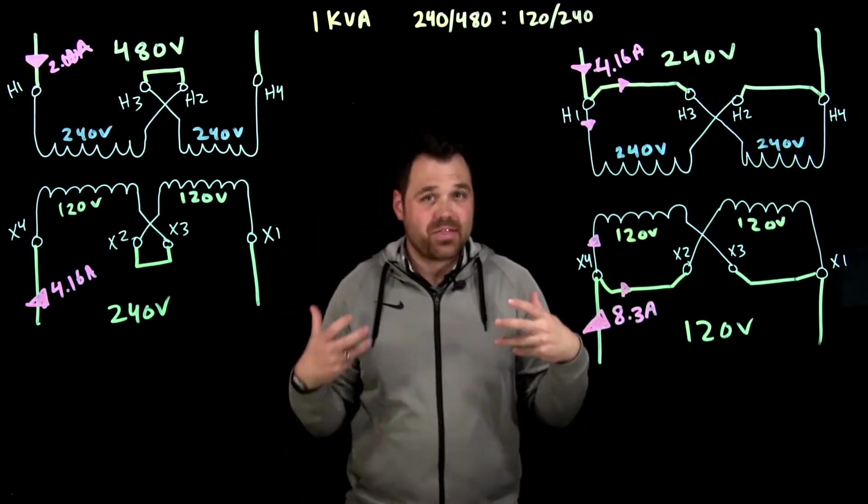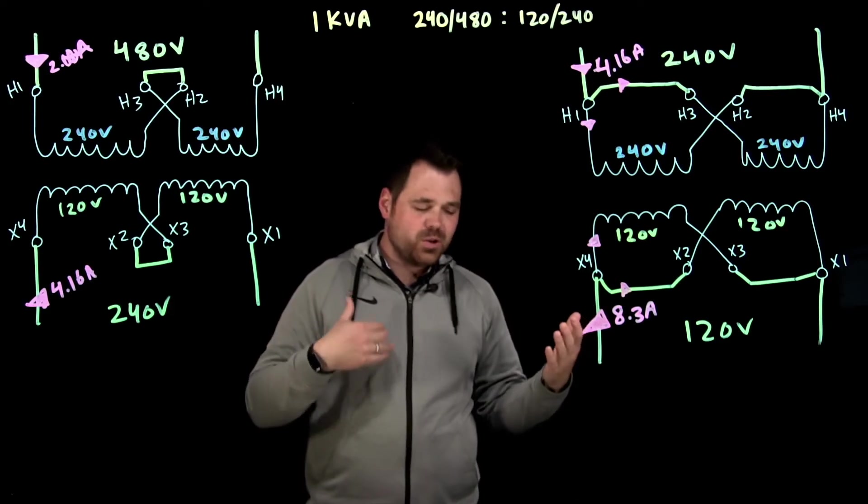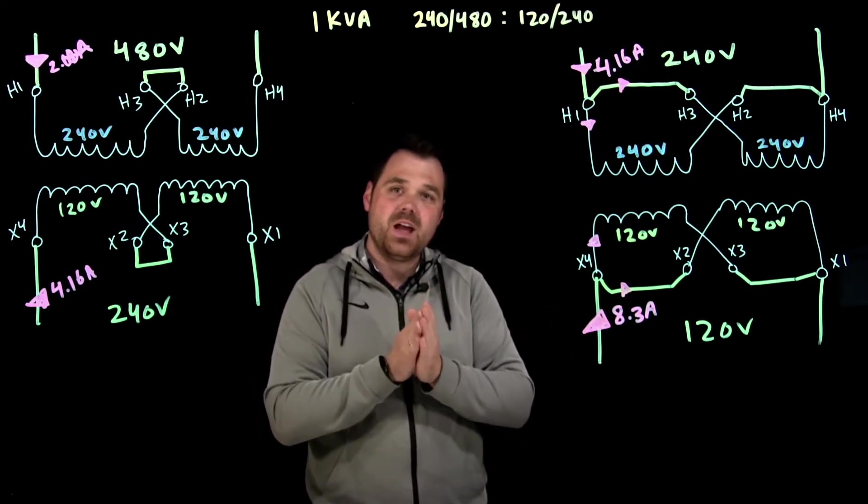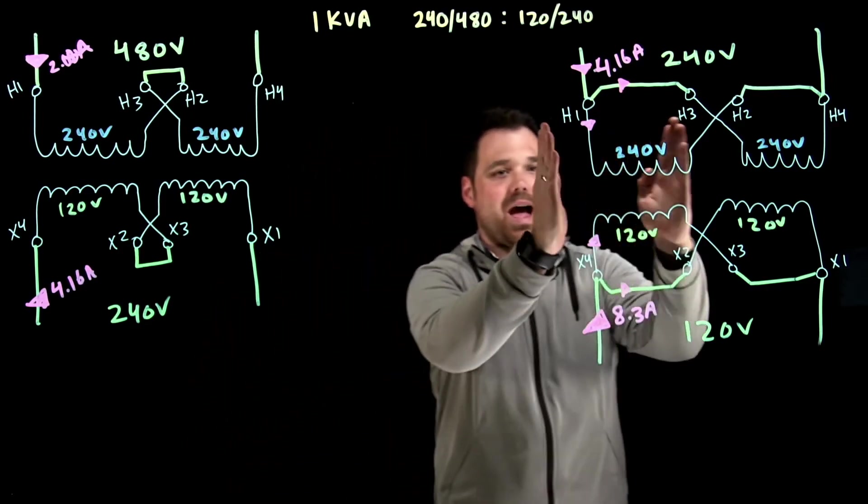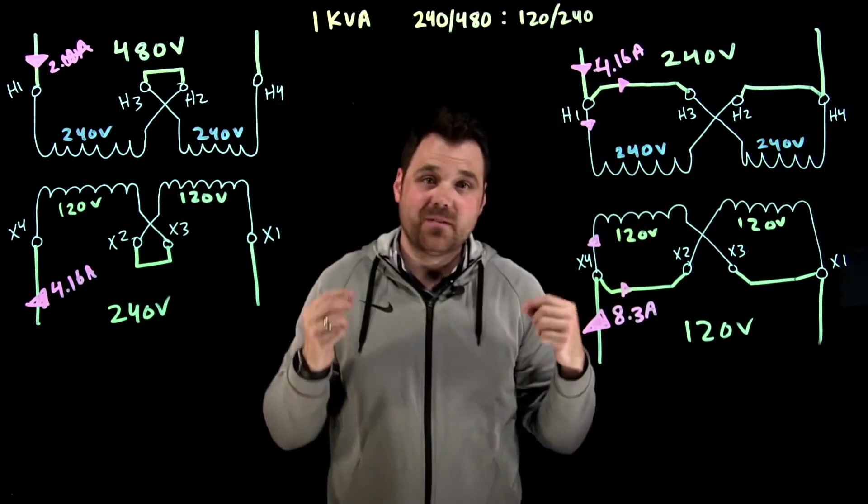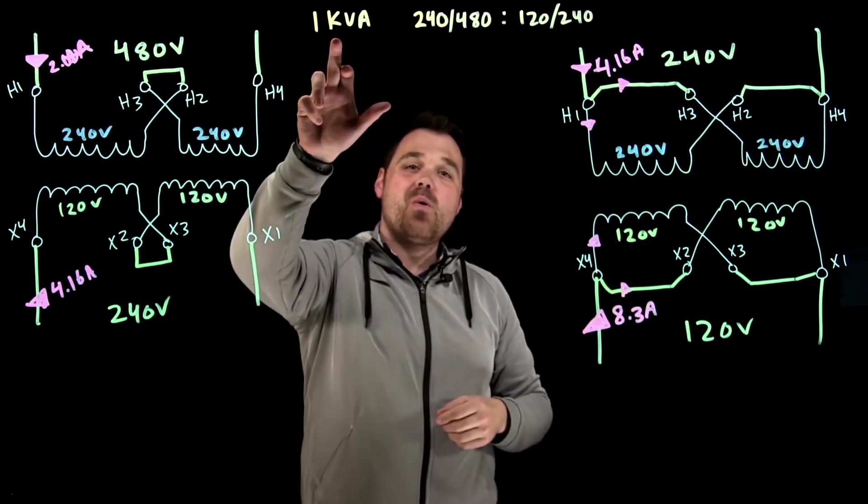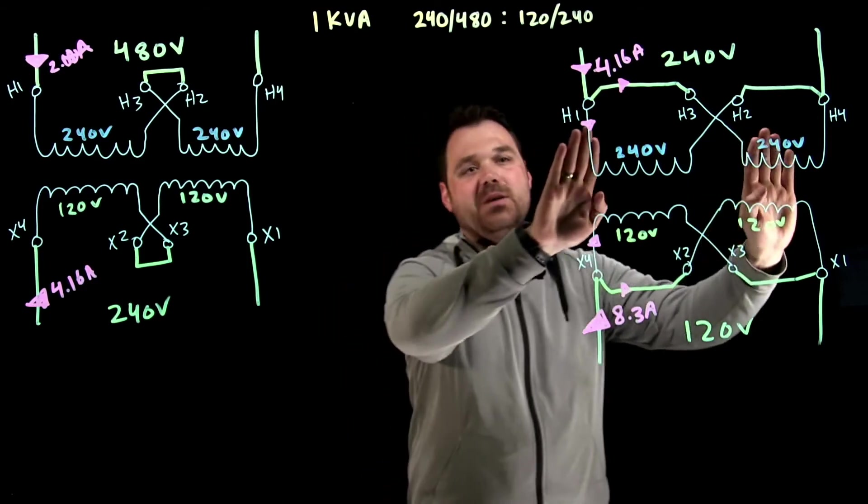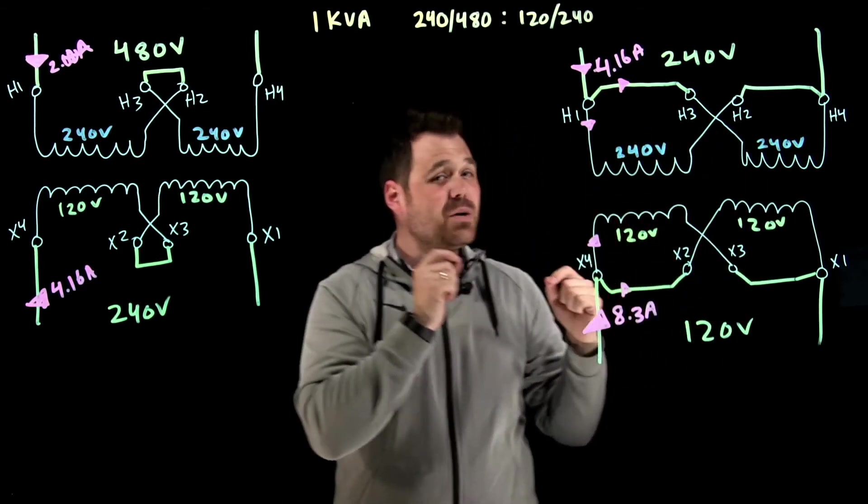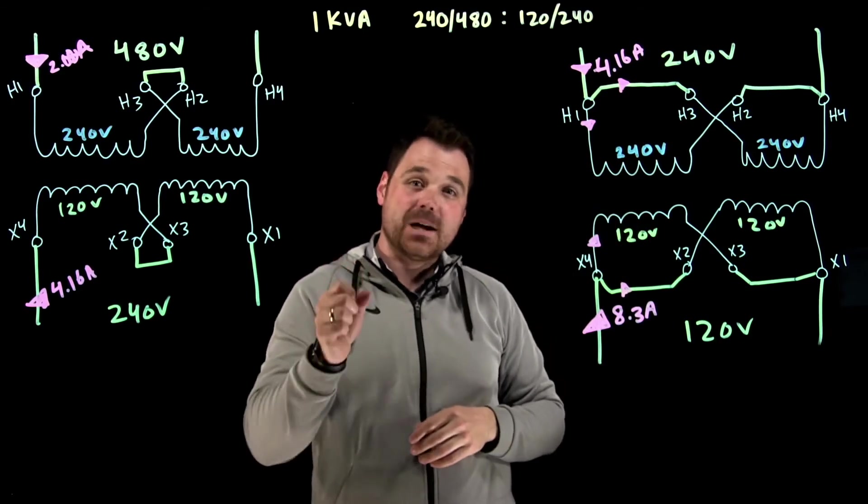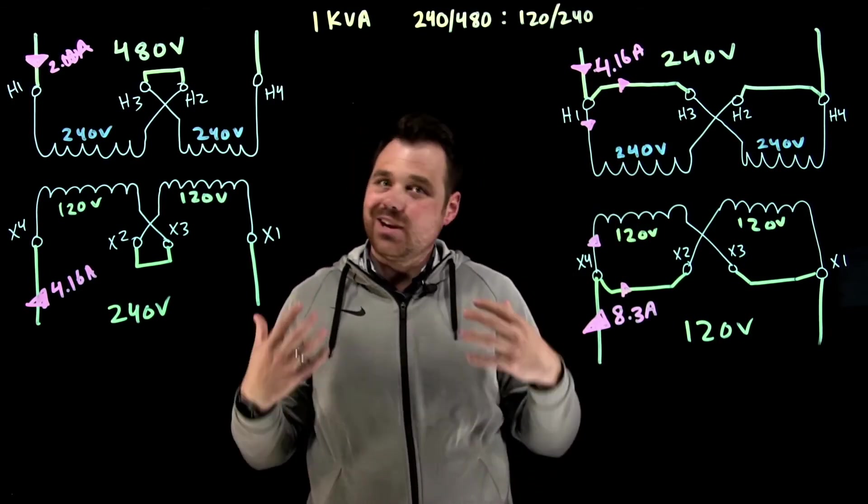Which if you're thinking about that math in your head, 120 volts, 4.16 amps, multiply them together, that gives me 500 VA. So each half of the transformer, each winding set is actually only good for 500 VA. The reason we get that one KVA or 1000 volt amps is because we're combining them. Whether it be in series or parallel, when I combine those windings, the VA adds up directly.